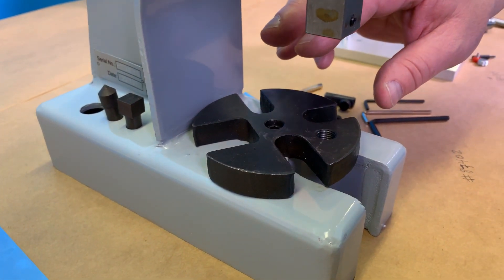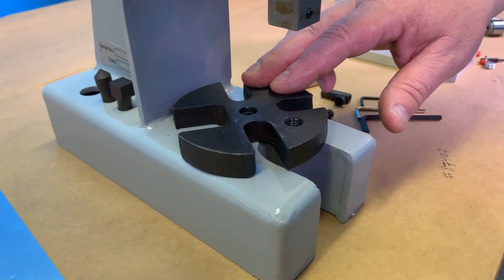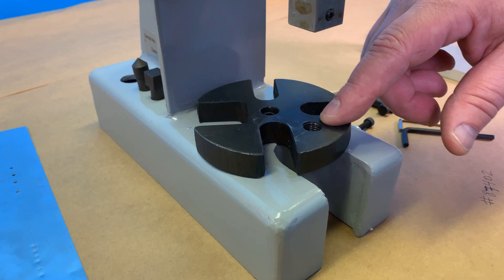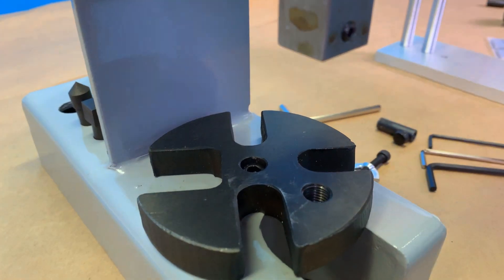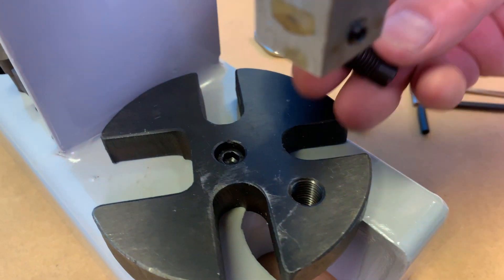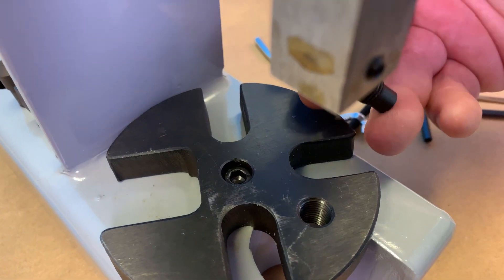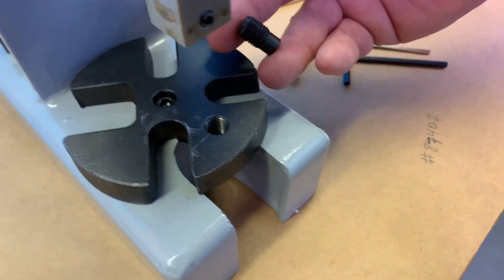The arbor press table has also been designed with a 7/16ths-20th threaded hole that holds our special dies that we also sell with the small press set I discussed earlier.